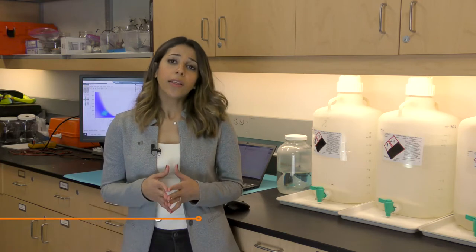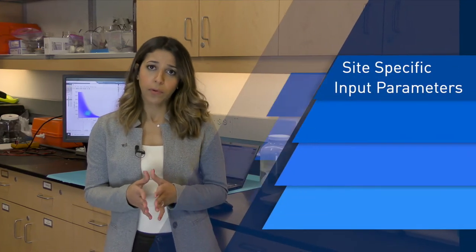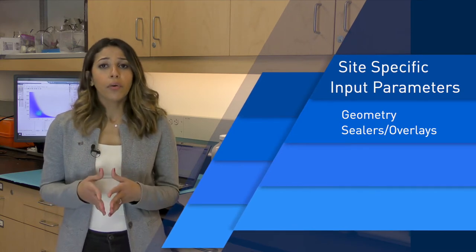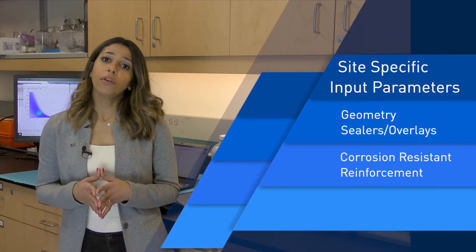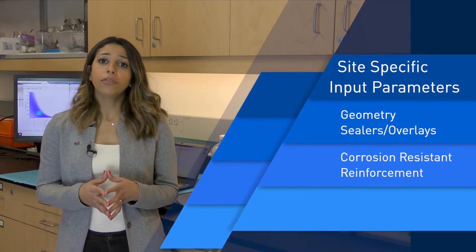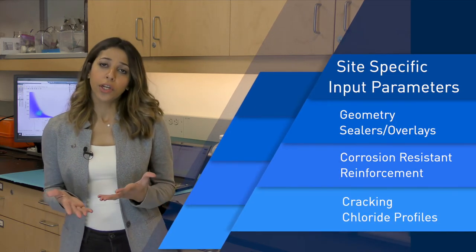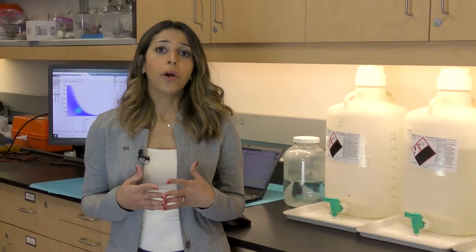WJCASTLE is developed and housed by WGE's material engineers, and this gives us full control over the evaluation process and also facilitates a customizable approach to construction parameters and exposure conditions unique to each project. That leads us to one of the main advantages of the software: the consideration of site-specific parameters. This can include construction geometry, installation or presence of coatings, sealers, overlays, the use of corrosion resistant reinforcement, concrete cracking or existing chloride profiles, or special exposure conditions like two-sided exposure. WGE continues to add and improve those capabilities in response to project needs.